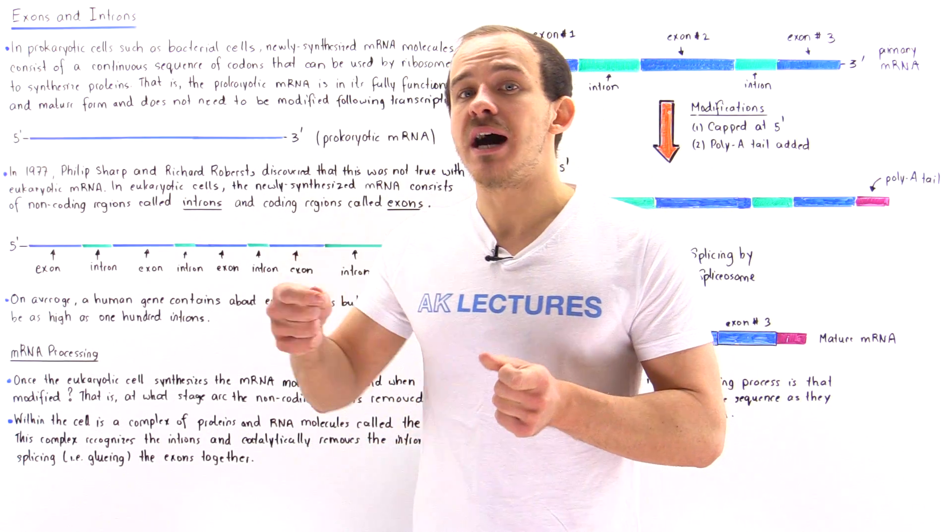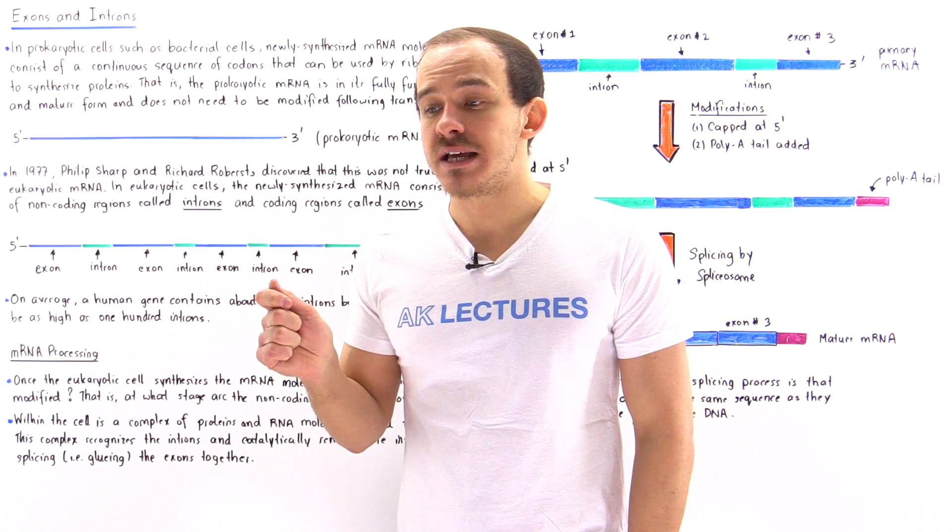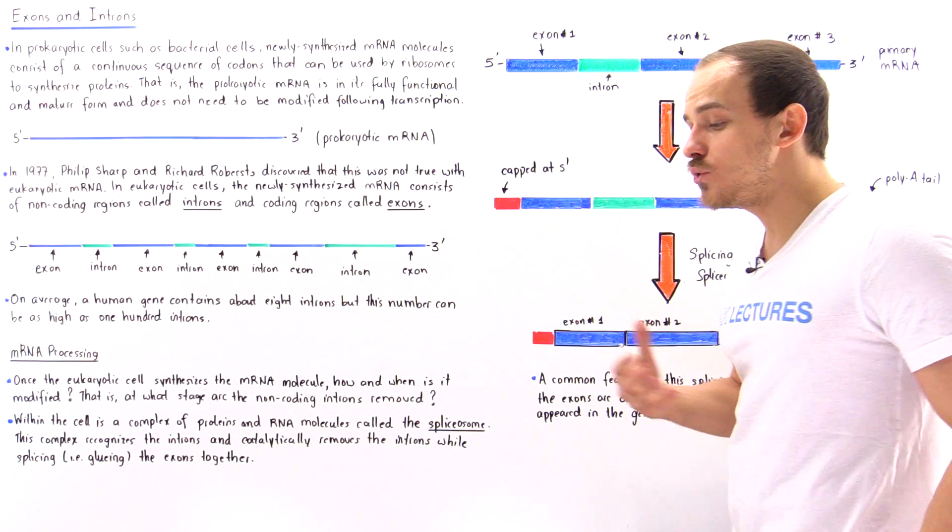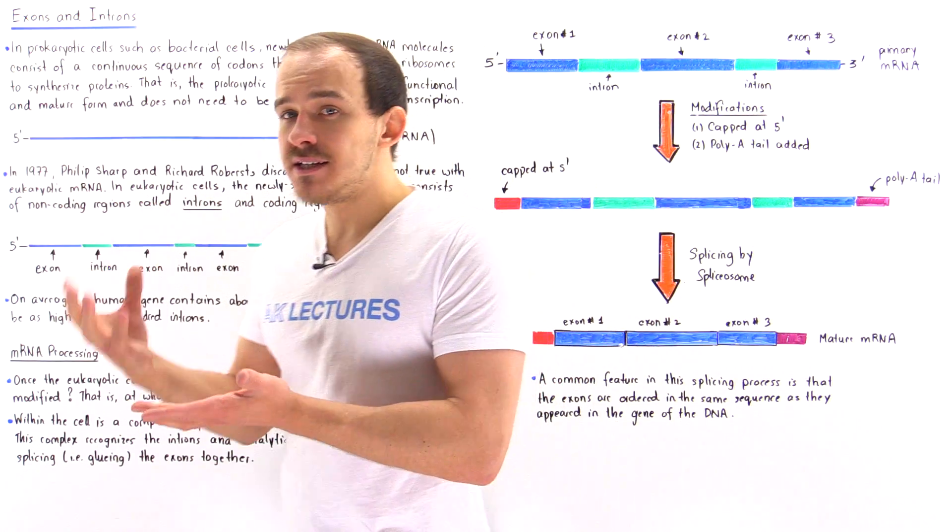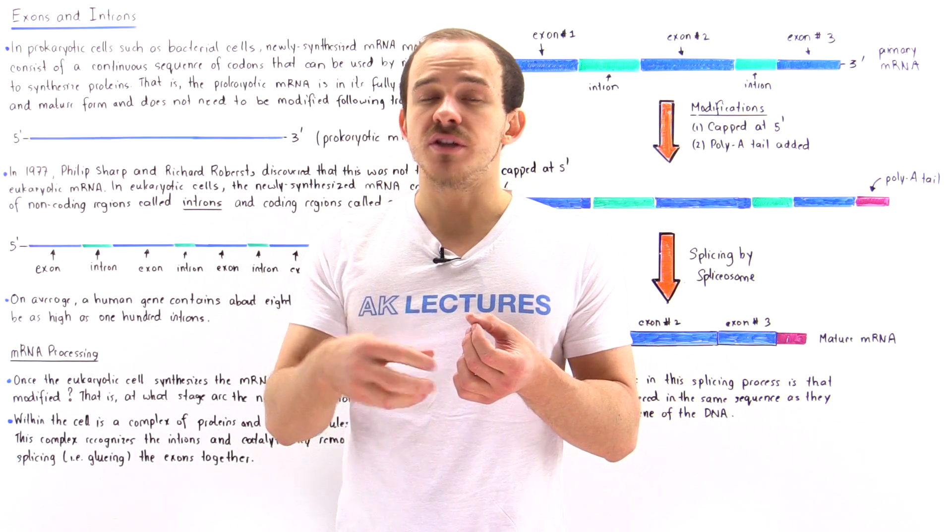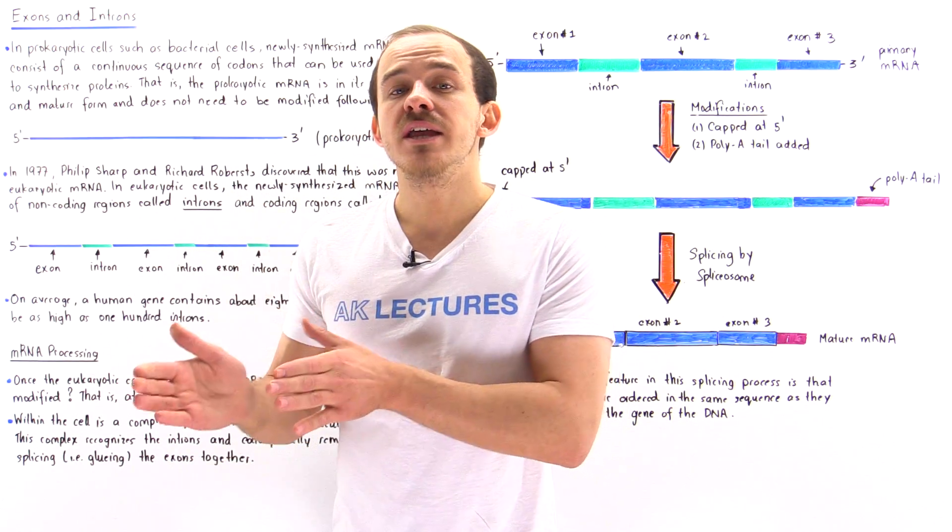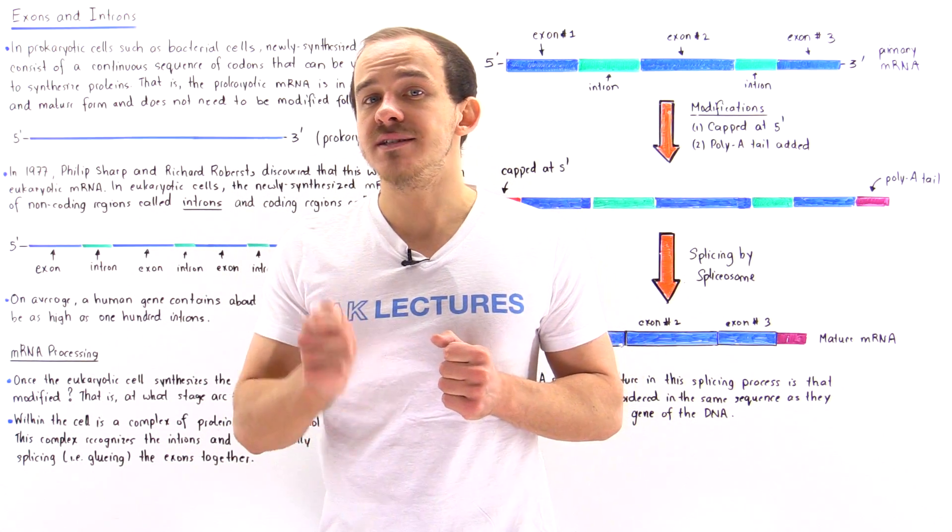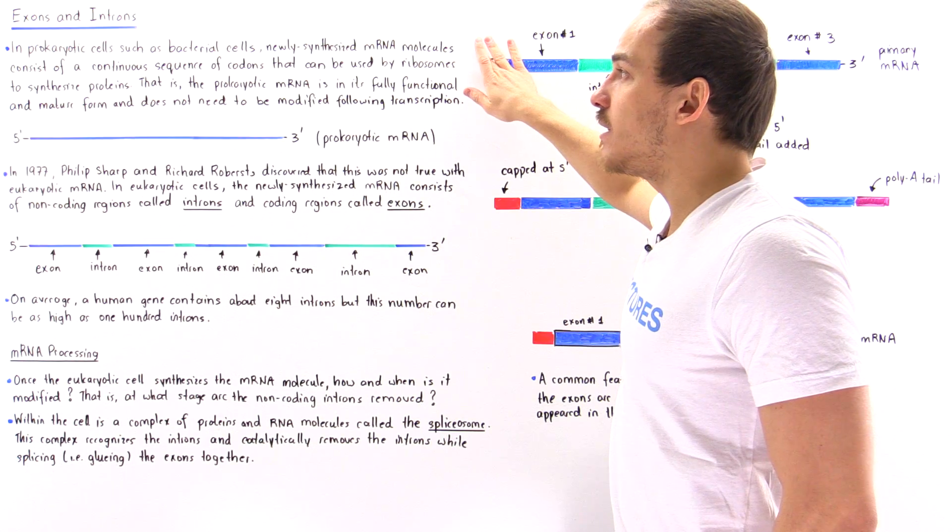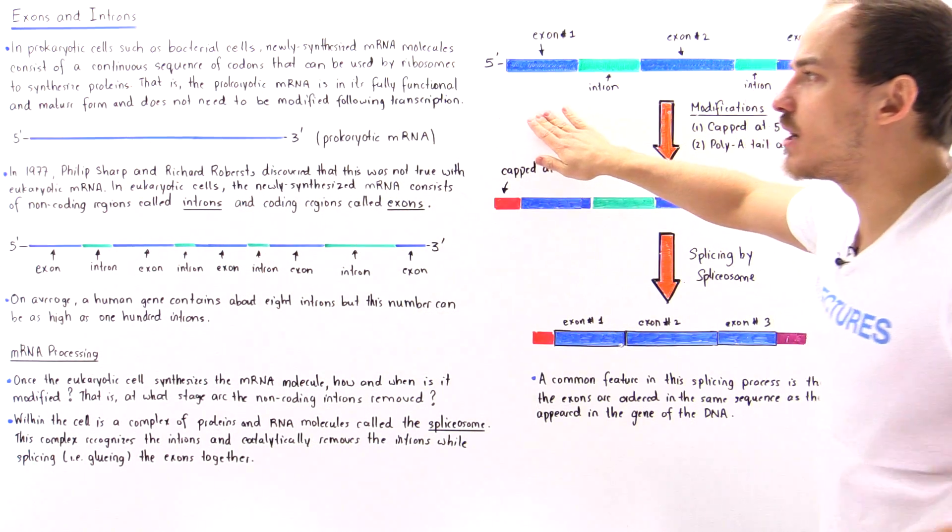translation usually begins on that mRNA molecule before it is actually synthesized. And this is in contrast to how it takes place inside our cells, inside eukaryotic cells. So inside bacterial cells and many other prokaryotic cells, translation, the process of protein synthesis, begins on that mRNA molecule before that mRNA molecule is actually completely synthesized. And that's because the newly synthesized mRNA molecule in prokaryotic cells consists of a continuous sequence of codons.